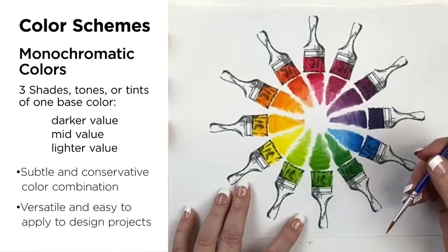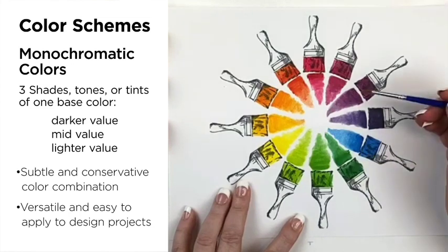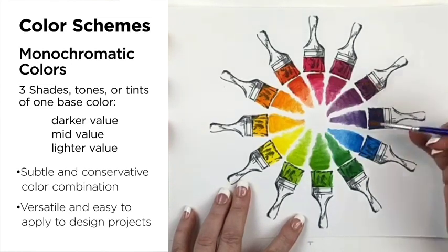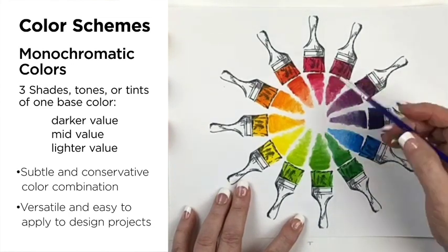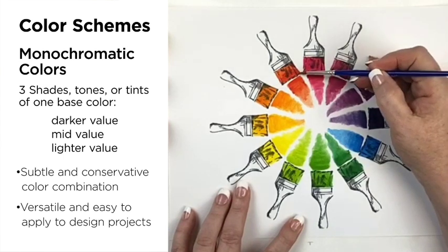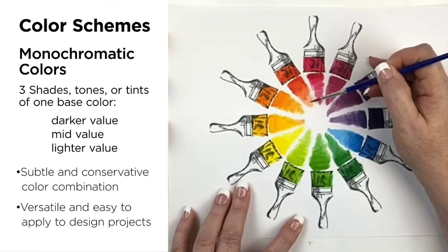A monochromatic color scheme is three shades, tones, or tints of one base color — like this orange: a darker value, a mid value, and a lighter value.